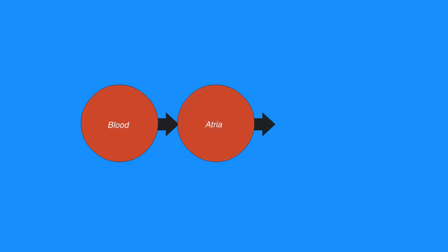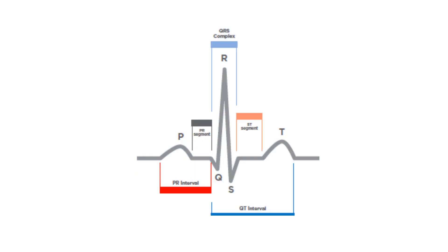When blood enters the atria of the heart, an electrical impulse sent from the SA node conducts through the atria, resulting in atrial contraction, which registers as the P wave on an electrocardiogram, or ECG strip.